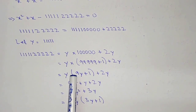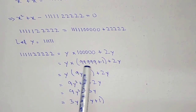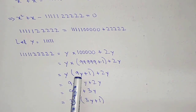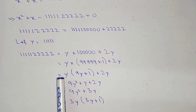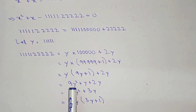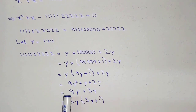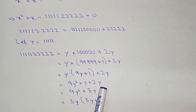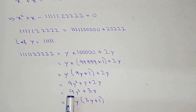So 9 into 5 times 1 gives us this number, plus 1 plus 2y. Now 9y into y gives 9y squared, plus y plus 2y. So 9y squared plus 3y — taking 3y common, we get 3y into (3y plus 1).